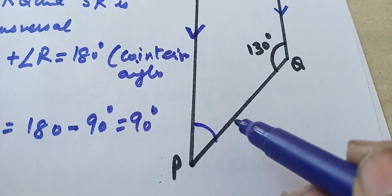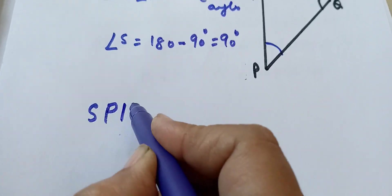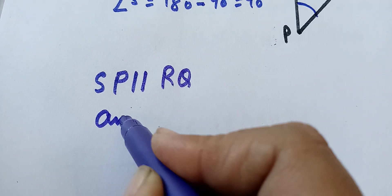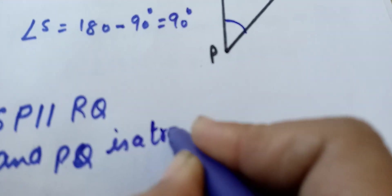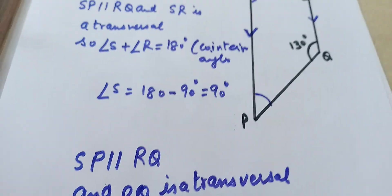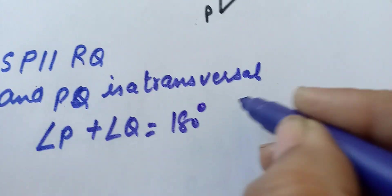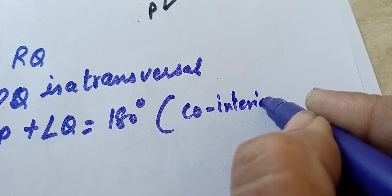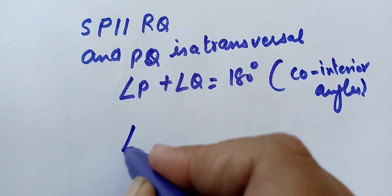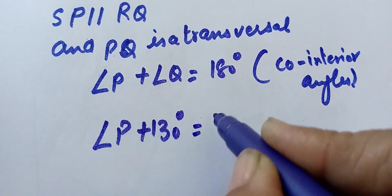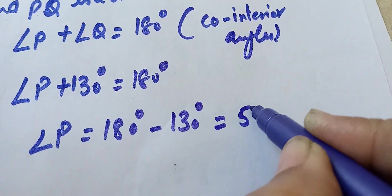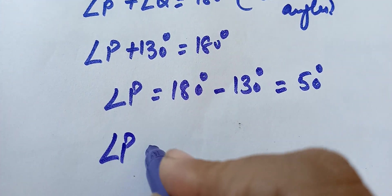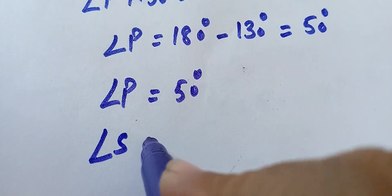Now we have to find out angle P. Using the same criteria: SP is parallel to RQ and PQ is a transversal. So angle P plus angle Q equals 180 degrees — these are co-interior angles. Angle Q is 130 degrees, so angle P will be 180 minus 130 degrees, which means angle P is 50 degrees.